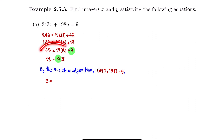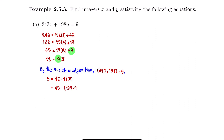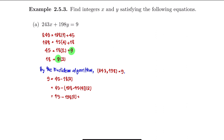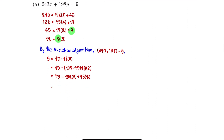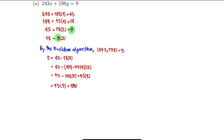So 9 becomes 45 minus 18 times 2. We then write 18 in terms of 198 and 45: 18 equals 198 minus 45 times 4. Substituting, we get 45 minus (198 minus 45 times 4) times 2, and distributing gives us 45 minus 198 times 2 plus 45 times 8, which simplifies to 45 times 9 plus 198 times negative 2.